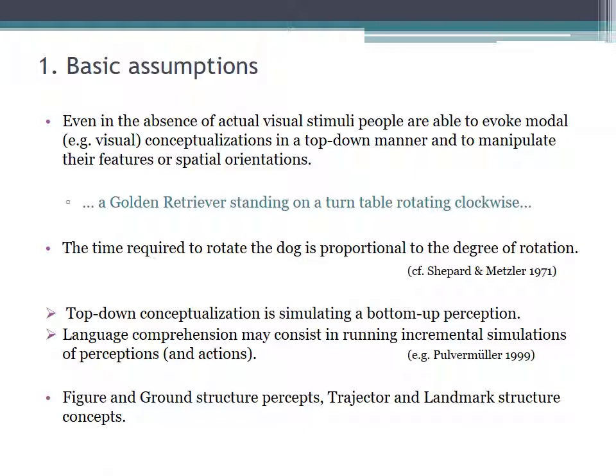For example, imagine a golden retriever standing on a turntable, rotating clockwise. The time you require to rotate the dog can be shown to be proportional to the degree of rotation. This classical finding and the one on retinotopic mappings indicate that we can characterize top-down conceptualization as a simulation of bottom-up perception. And in a similar fashion, there is growing evidence that language comprehension may consist in running incremental simulations of perceptions and even actions.